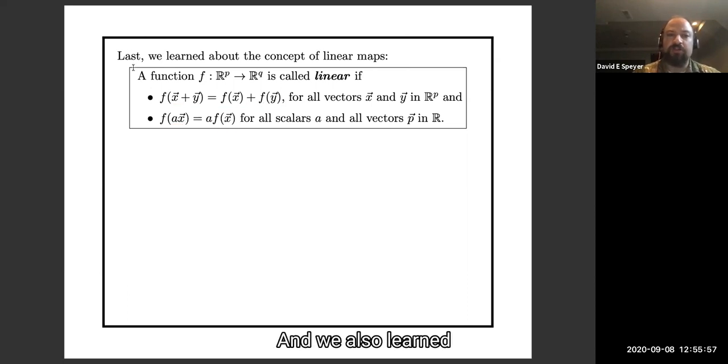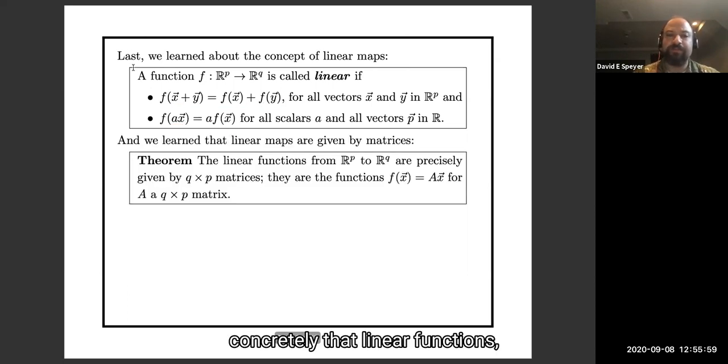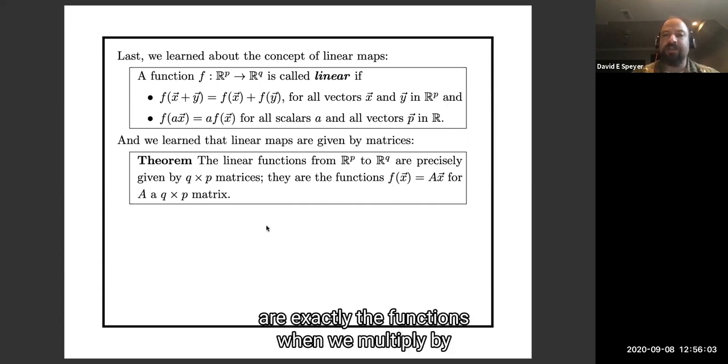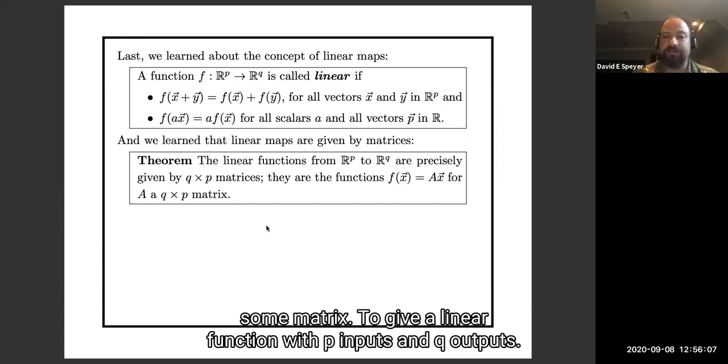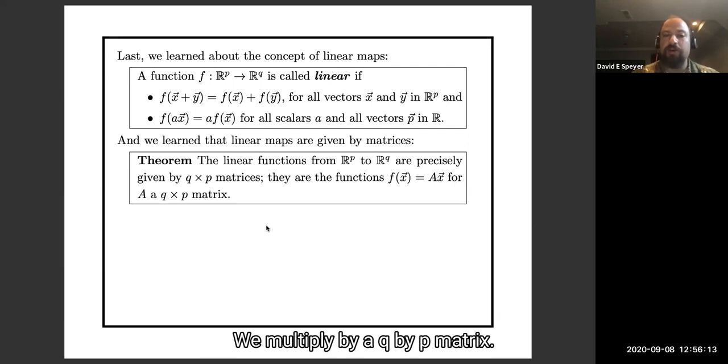We also learned concretely that linear functions are exactly the functions where we multiply by some matrix. To give a linear function with P inputs and Q outputs, we multiply by a Q by P matrix.